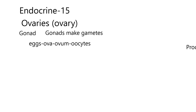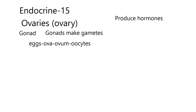Ova is plural — O-V-A. If you want to say one, then you would say ovum, or you could say egg. Sometimes, in early development, they're called oocytes — just giving you a heads up on all the terms that can be used. The gonads always have two claims to fame: one is making the gametes, and the other is that they produce hormones. So ovaries produce hormones, testes produce hormones. We're doing ovaries, so let's talk about the hormones.